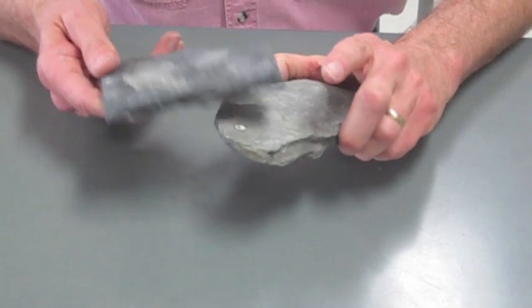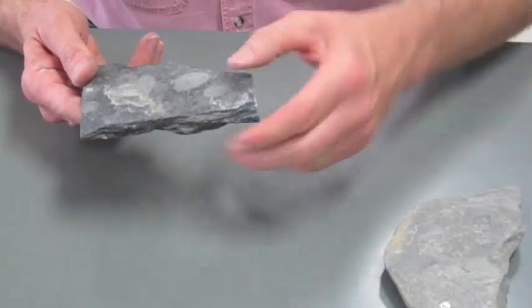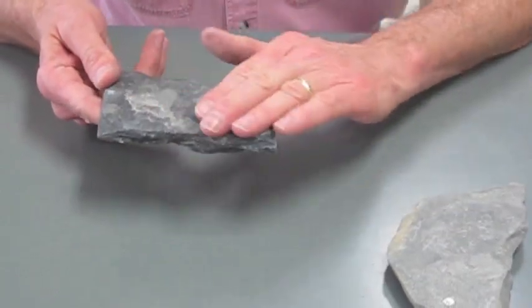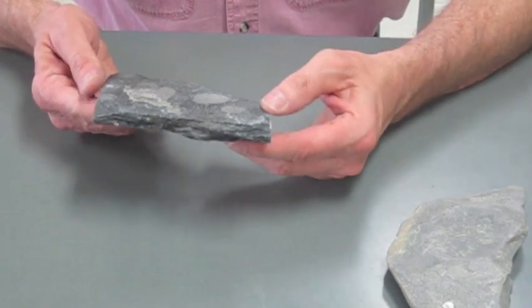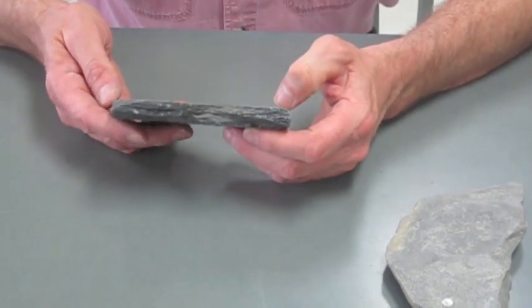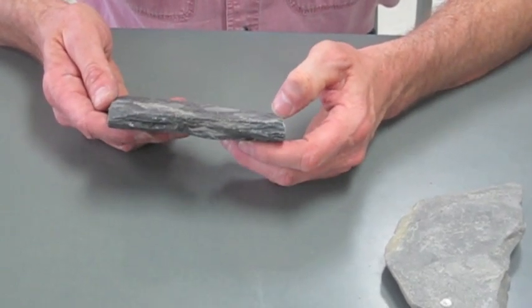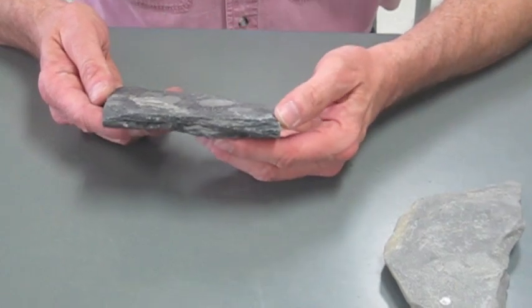It tends to have a harder sound to it when you go tapping them together, and of course it breaks into flat surfaces, and perhaps you've seen slate roofs. So a foliated metamorphic rock, really fine-grained, would be slate.